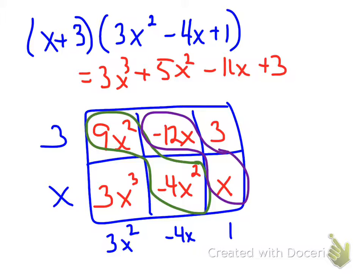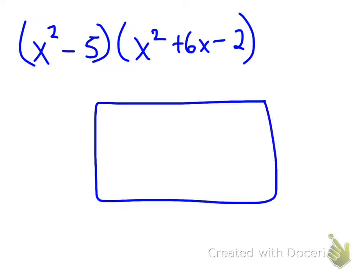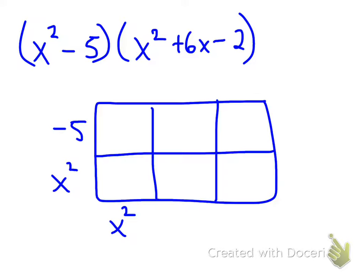I'm going to go through one more example. Again, I have a binomial times a trinomial, so I'm going to make my box a 2 by 3 box. x squared minus 5, and x squared plus 6x minus 2.